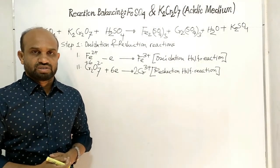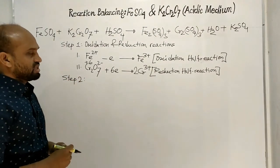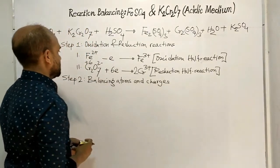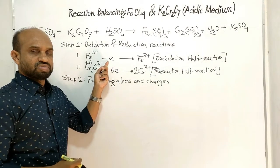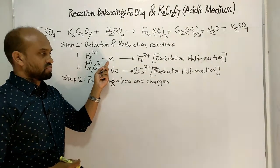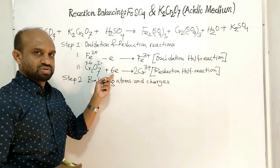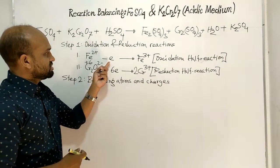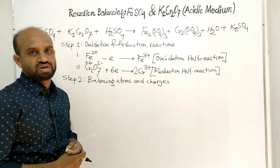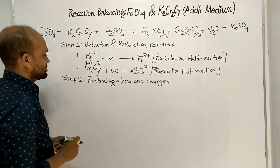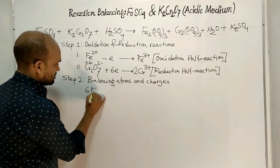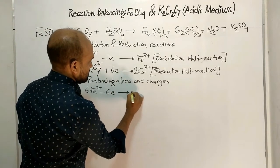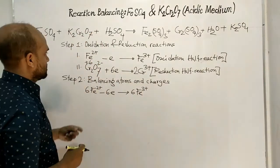Step 2 is balancing atoms and charges. In the oxidation half reaction there is only 1 electron, but in the reduction half reaction there are 6 electrons. That is why equation 1 is multiplied by 6 to equalize the electrons. We can then write equation number 3: 6 Fe²⁺ minus 6 electrons gives 6 Fe³⁺.